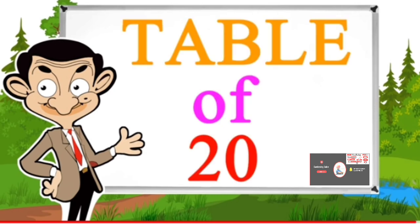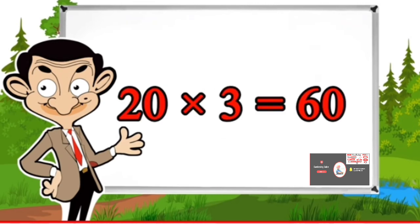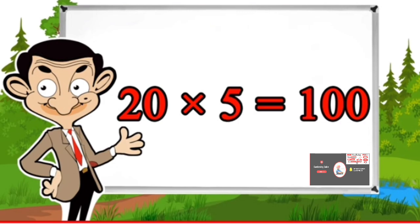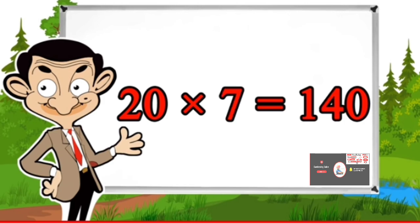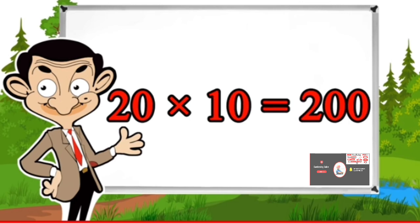Table of 20: 20×1=20, 20×2=40, 20×3=60, 20×4=80, 20×5=100, 20×6=120, 20×7=140, 20×8=160, 20×9=180, 20×10=200.